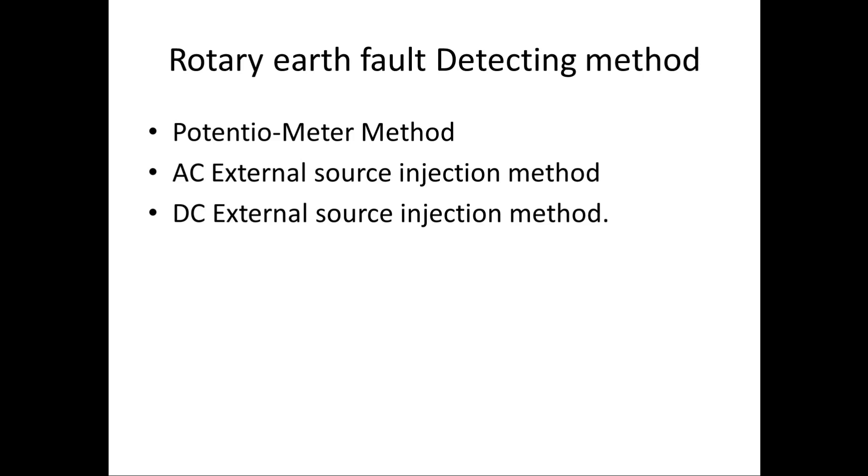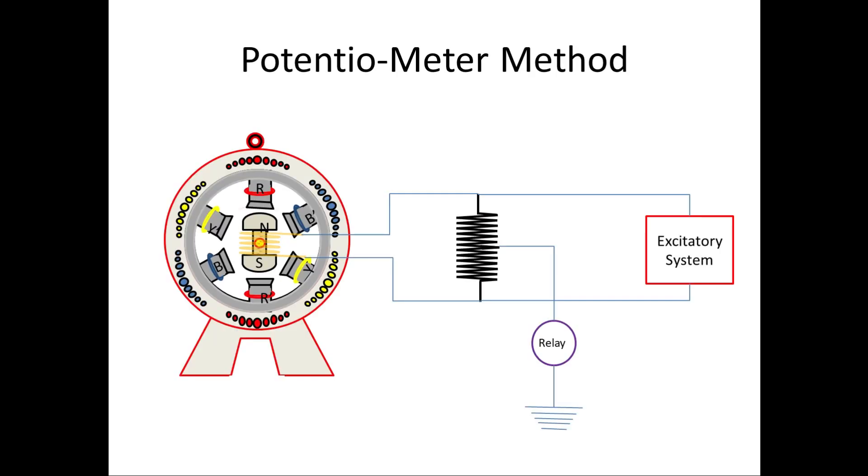First, the potentiometer method. It is very easy and simple method to find the earth fault on rotor. Normally this is used in very low power generators.